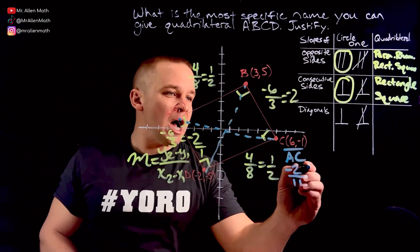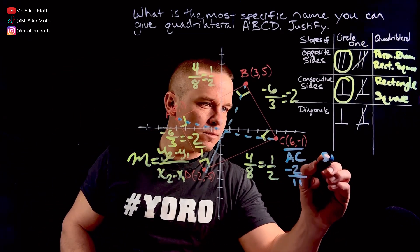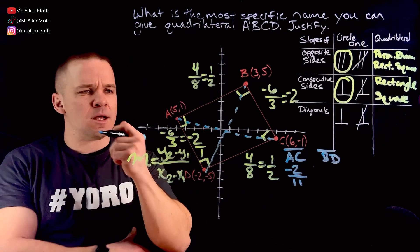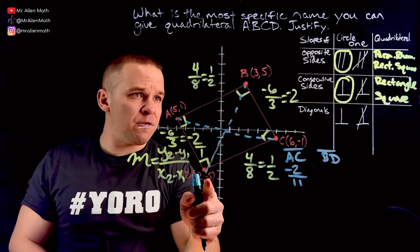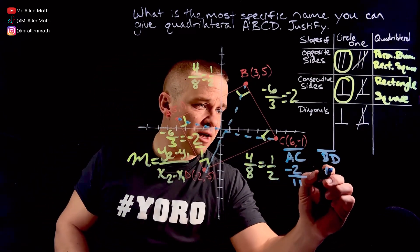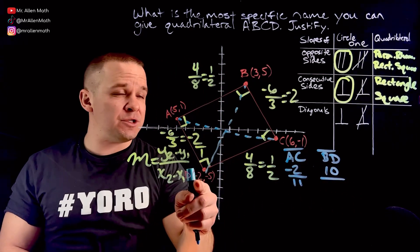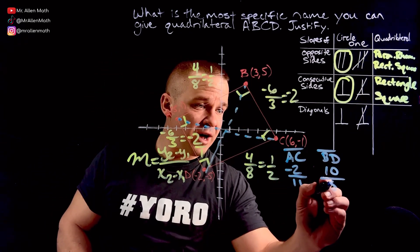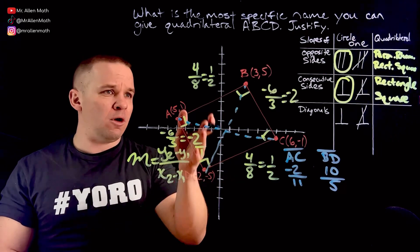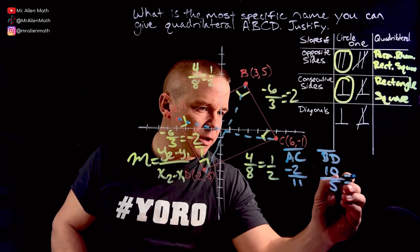That's my slope of that diagonal. How about for BD? What's that slope going to be? Well, I know this is going to be positive. It's going up and to the right. So let's see here. From negative 5 to 5, that's a change of 10. And then from negative 2 to 3, that's a change of 5. That's a change of 5 right there. Let's double check that. I like it. Beautiful. So this ends up equaling 2.